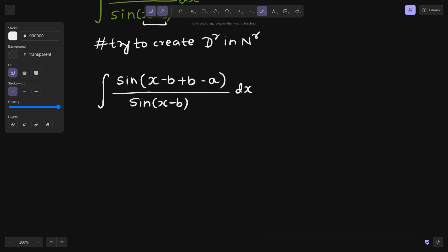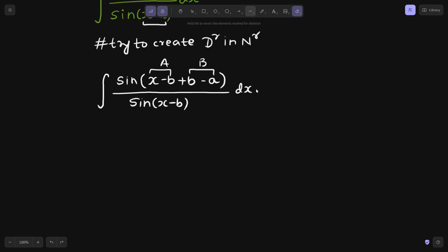Now you can rewrite this or leave it as it is. So this is your a and this is your b, and you can now apply the formula of sin of a plus b. I hope you know that formula, if not, let's write it down once again.